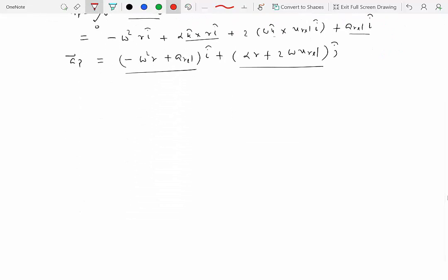Now let's compare this with acceleration in R theta system. We have R double dot minus R theta dot squared E R hat plus 2 R dot theta dot plus R theta double dot E theta hat.